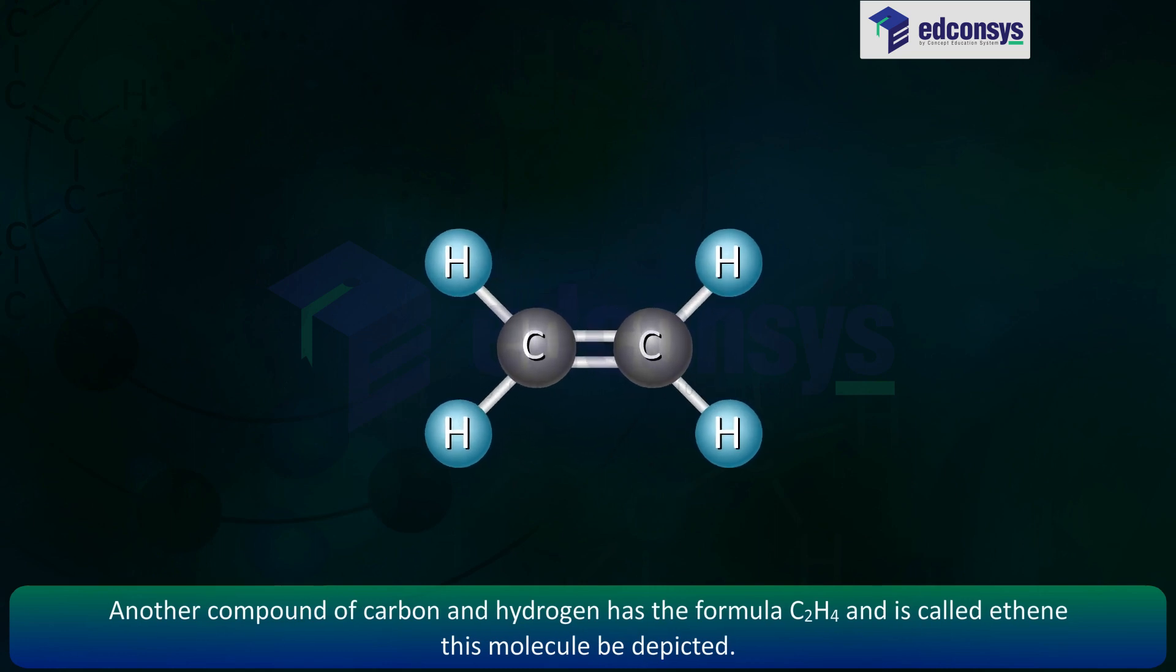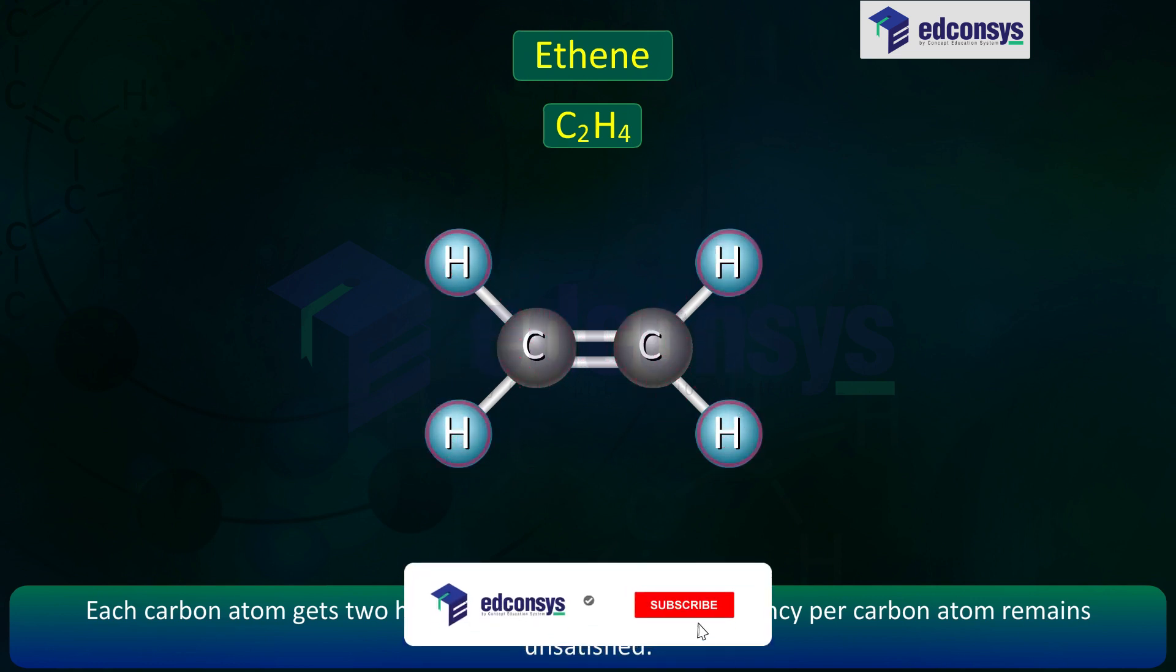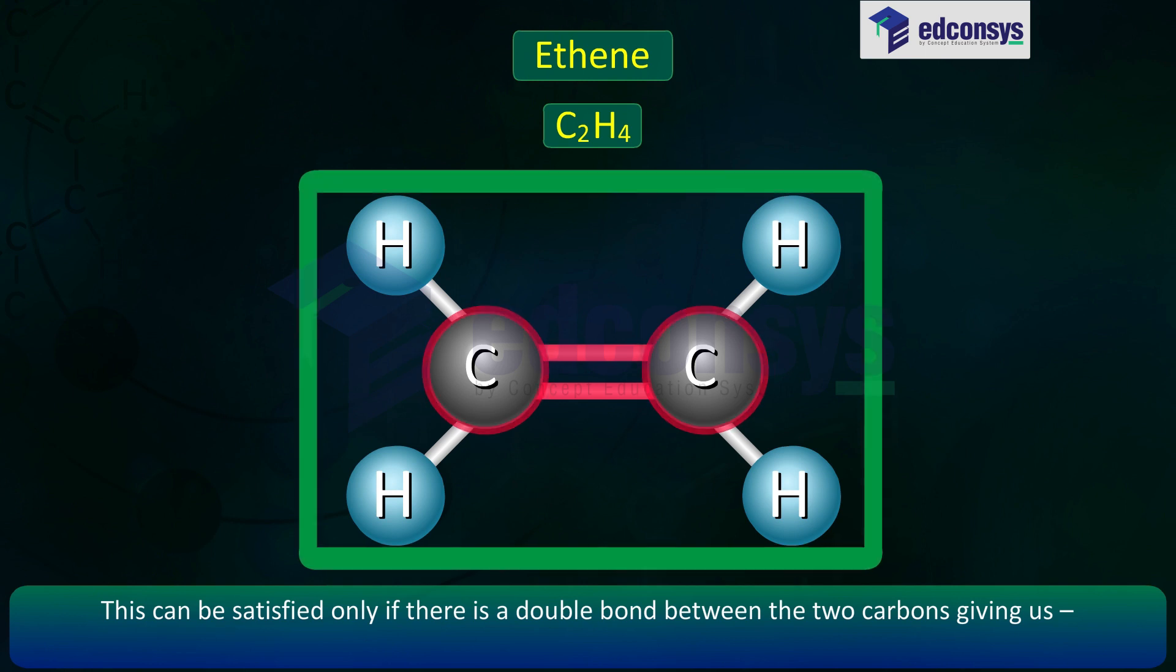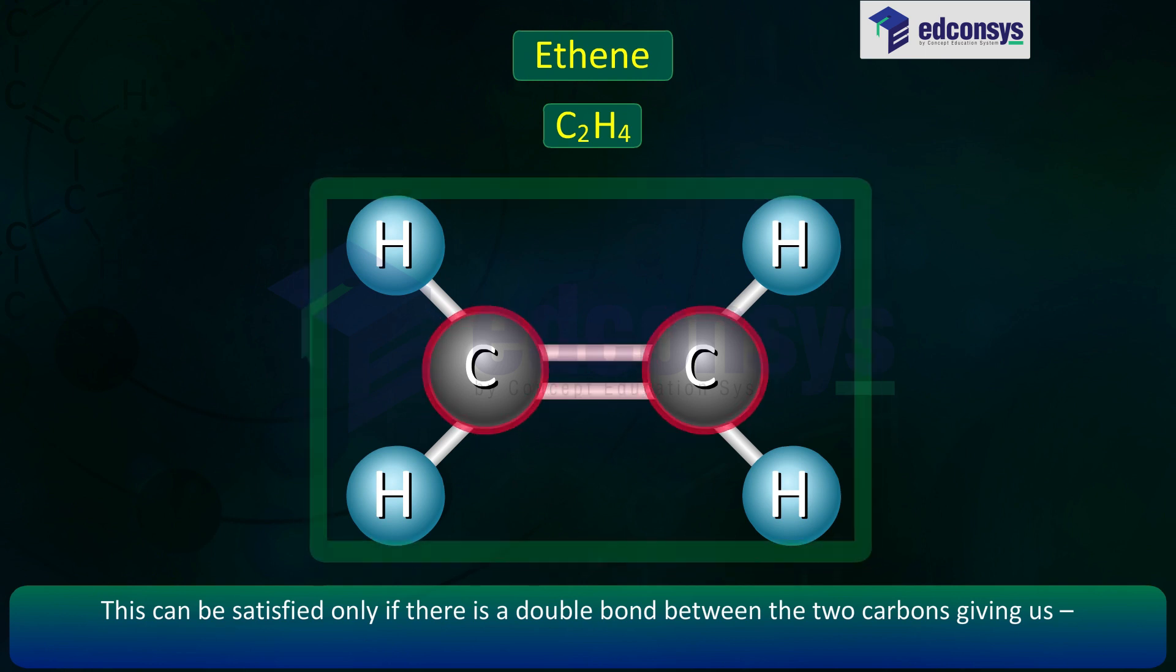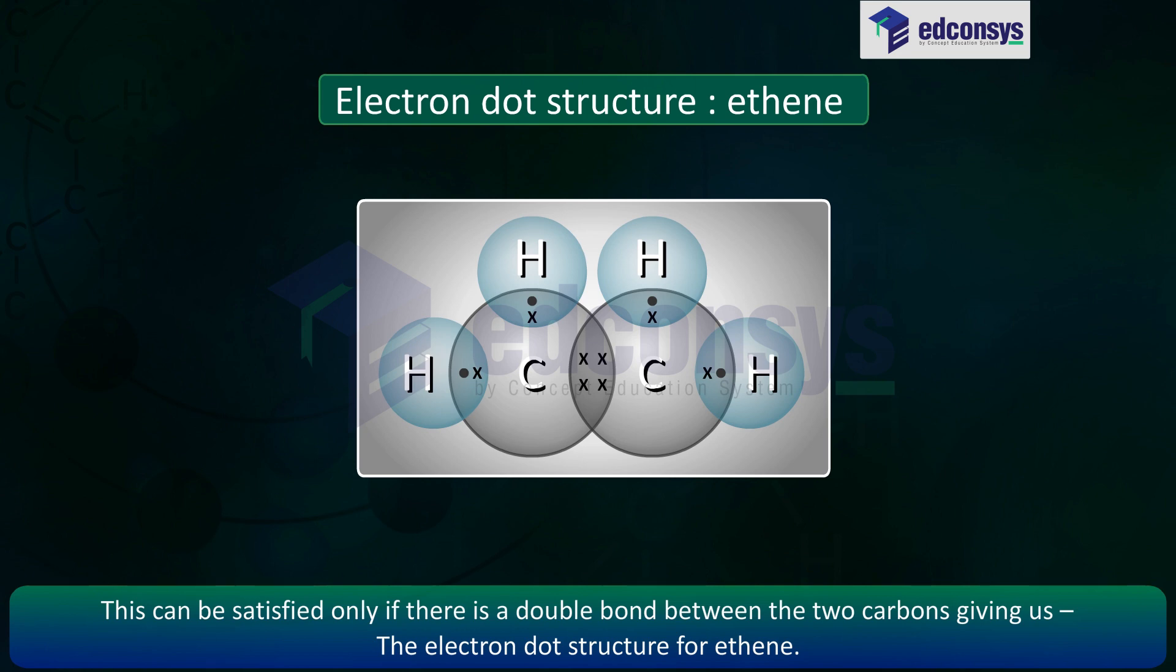Another compound of carbon and hydrogen has the formula C2H4 and is called ethene. Each carbon atom gets two hydrogen atoms, so one valency per carbon atom remains unsatisfied. This can be satisfied only if there is a double bond between the two carbons, giving us the electron dot structure for ethene.